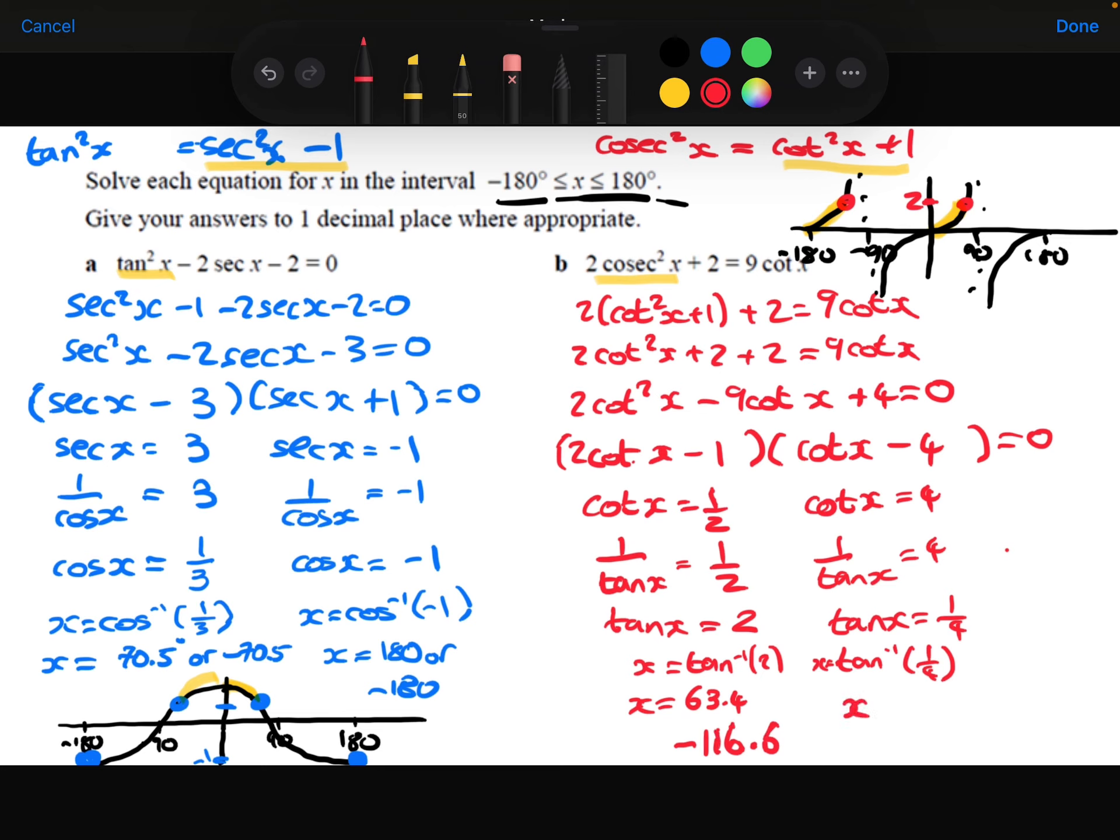Then when we do tan inverse of a quarter, we get 14.0 degrees. And if we look at that on our graph, a quarter is roughly here.